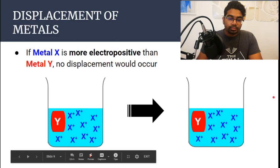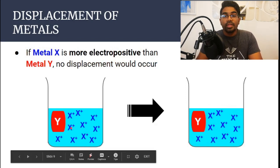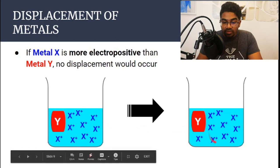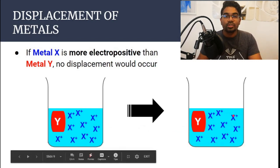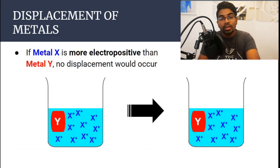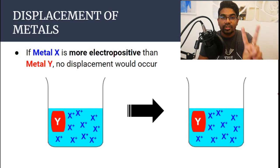However, if metal X is more electropositive, then no displacement will occur. So even though we add Y, if X is more electropositive, then X will remain in the solution as part of the salt solution in its compound form — it will not be displaced out to become a solid metal. The key to whether a displacement reaction takes place is to compare the electropositivity between the two metals involved.